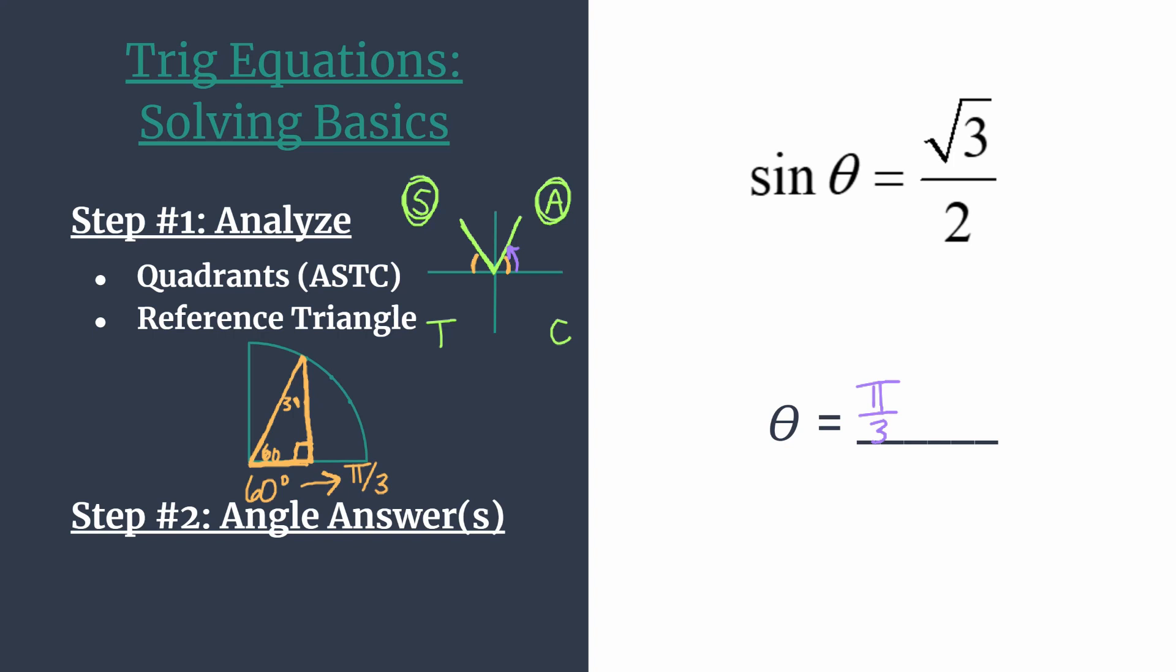Now our second quadrant angle, we have to do a little bit of manipulation here. We know that if we rotated halfway all the way to pi, or it is pi, a halfway rotation, but we're rotating just a little bit less than that. We're rotating like this for this angle. So basically we need to subtract our reference angle from pi. And I think it might help to rewrite pi as three pi over three, and then just take away one pi over three. So our quadrant two angle then must be two pi over three.